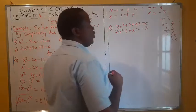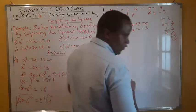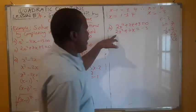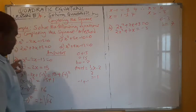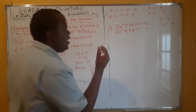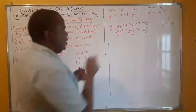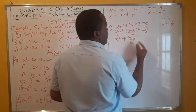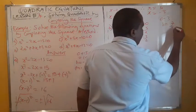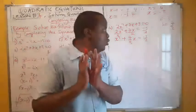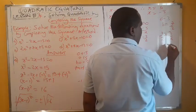Before we proceed, it's always important to note that the coefficient of x squared must be 1. Here we need to divide by 2 first. So we get x squared plus 7 over 2 times x equals negative 3 over 2. Now for this equation, our b is 7 over 2. We must find half of 7 over 2, which gives us 7 over 4. It is 7 over 4 that we will square and add to both sides.